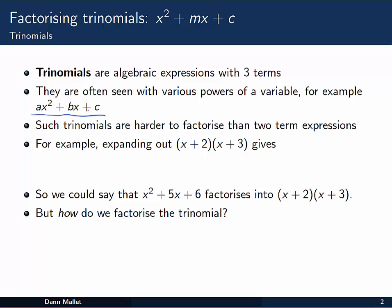a, b and c are just numbers, and x is a variable. Now such trinomials, such expressions, are harder to factorise than two term expressions because of the varying powers of x that you see in there.